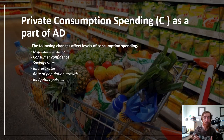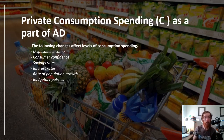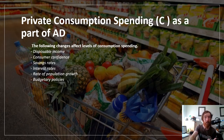Savings rates — if people are saving more, they're spending less. Interest rates — if interest rates are low, people will borrow and spend more money, so aggregate demand will increase. The rate of population growth — if there are more people, there's more spending. And budgetary policies — the things the government does, like changing taxes, and how that affects spending.